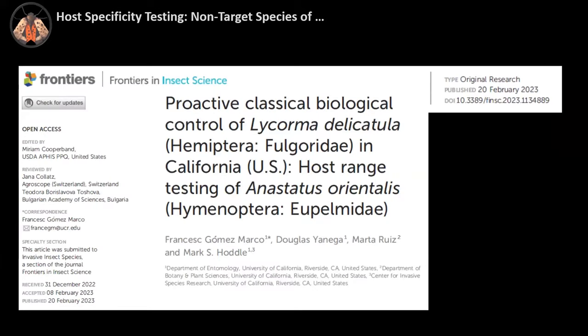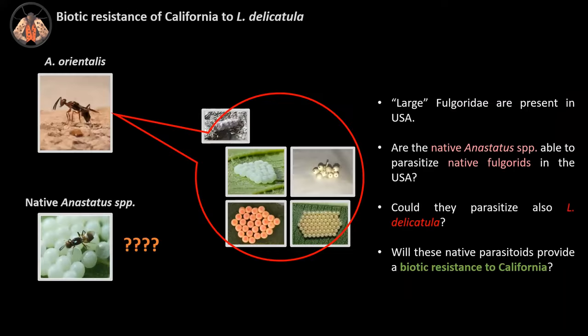These and other interesting results have been published recently in open access so everybody can access this information. After these not very promising results, we decided to explore the possibility of using native parasitoids against spotted lanternfly. Here in California we don't yet have the pest, so we have a bit more time to study this possibility. Anastatus genera tend to have a wide host range in the literature. For example, Anastatus bifasciatus, a parasitoid of BMSB used in Europe, had a very wide host range like Anastatus orientalis.